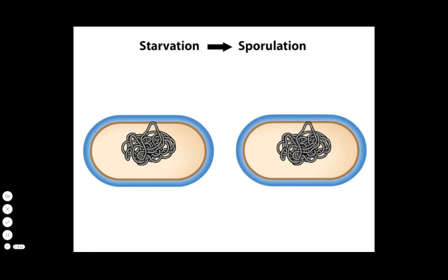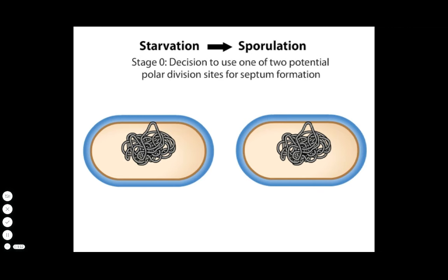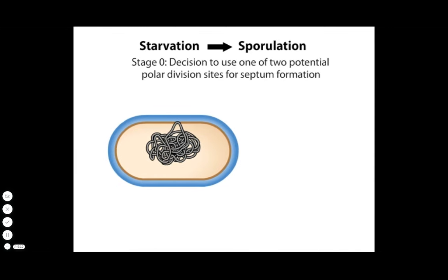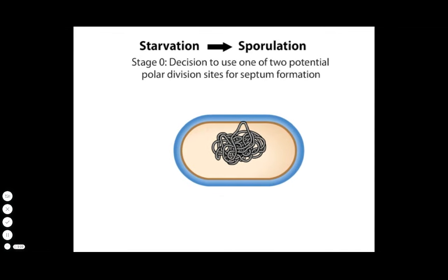Sporulation can be divided into eight morphological stages. Stage 0 represents the point at which the vegetative cell decides to use one of two potential polar division sites to begin septum formation, instead of the central division site used for vegetative growth.